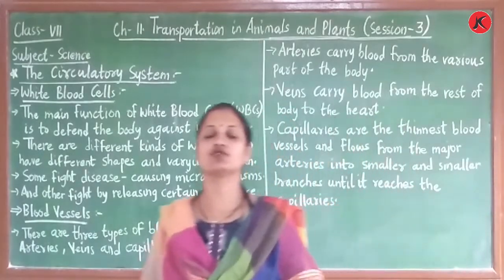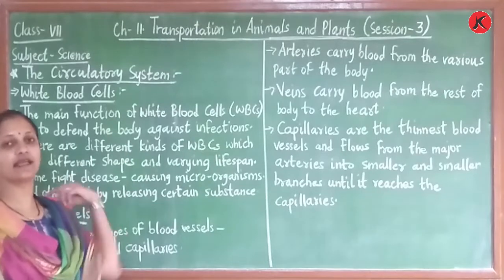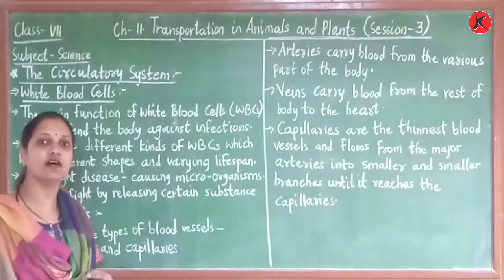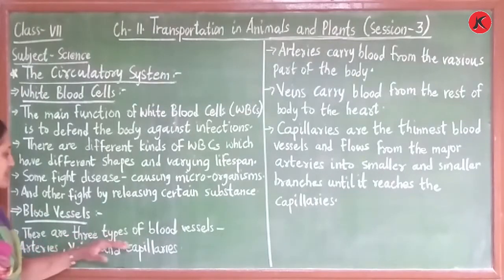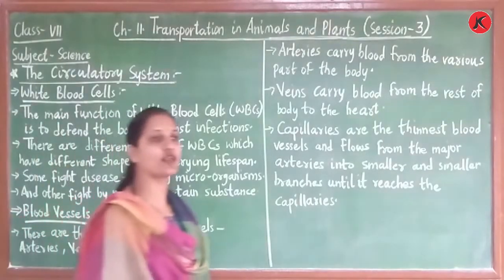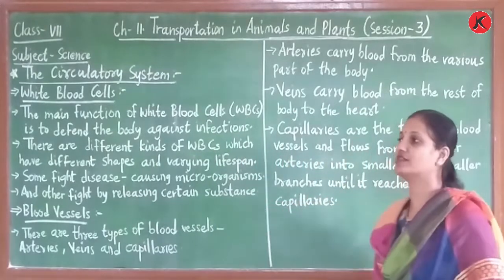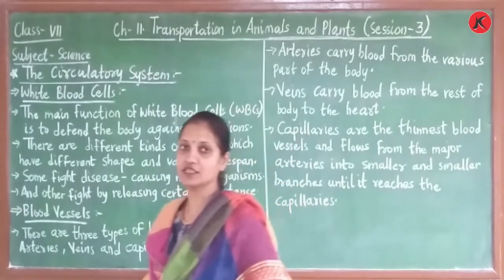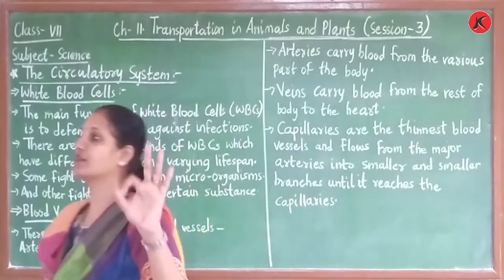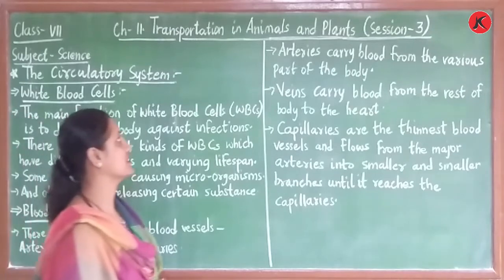We can have different types of infections in our body. Next is blood vessels. There are three types of blood vessels. हमारे body के अंदर main two types होते हैं — that is arteries and veins. And further, one type is capillaries. So there are three main types: arteries, veins, and capillaries.